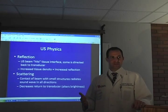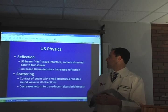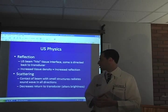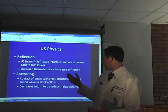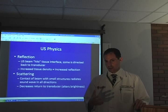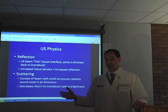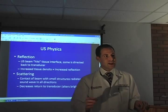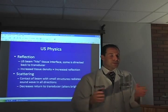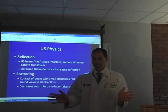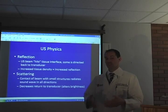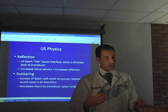Reflection causes brightness. When the ultrasound beam hits tissue, a certain amount is reflected back and sensed by the transducer. Increased tissue densities have increased reflection and therefore increased brightness on the ultrasound machine. Scattering occurs when small densities in whatever you are scanning reflect sound waves back but also scatter them in various directions away from your probe, decreasing return to the transducer and altering the amount of brightness perceived.